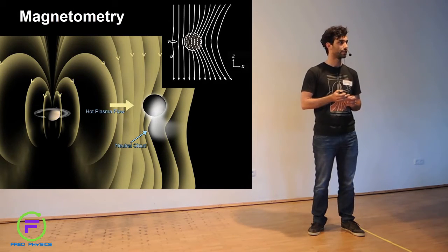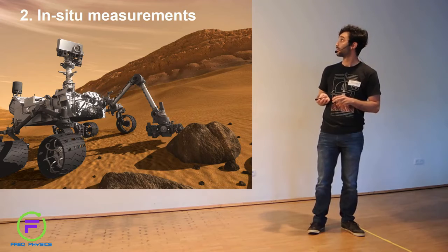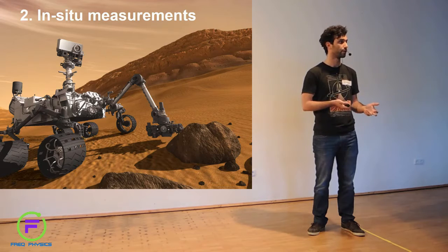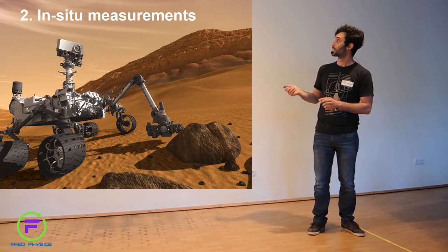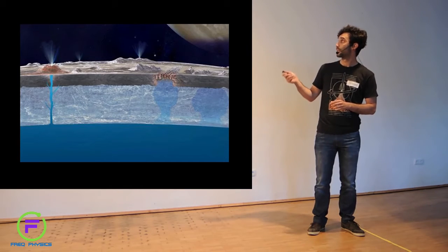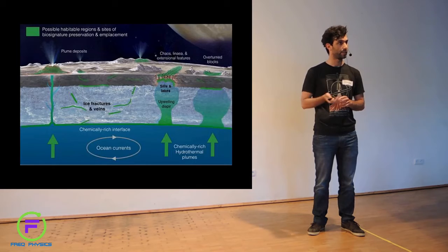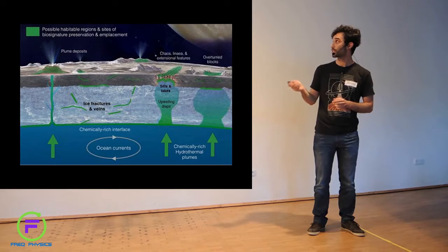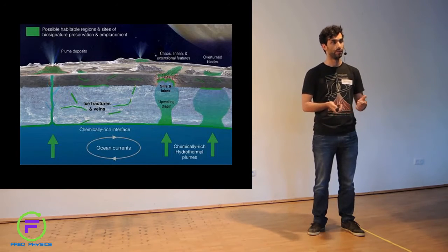The second way is in situ measurements, which is essentially going there and taking samples straight away. This can be used more whenever there's a chemical you need to detect, then you go there and you sample that chemical. So this is your typical cutout of an icy moon. You have the ocean, the icy shell, transport mechanisms either plumes or glacial, and the surface.